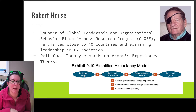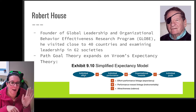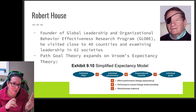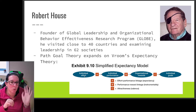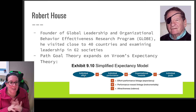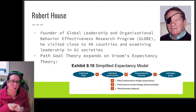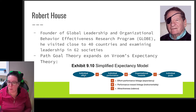House's path-goal theory expands on Vroom's expectancy theory. Recall that Vroom's expectancy theory says management needs to tie workers' effort to their individual performance — so high effort should yield high performance; that's the expectancy aspect. Then high performance needs to tie to reward — that's instrumentality. And those rewards need to match what the individual wants; that's valence. House's work ties to this: good effort leads to high performance, which is tied to rewards, and the rewards align with what people want.